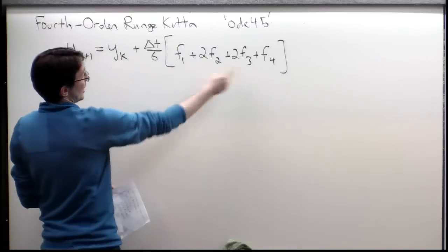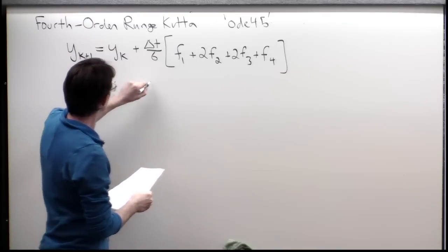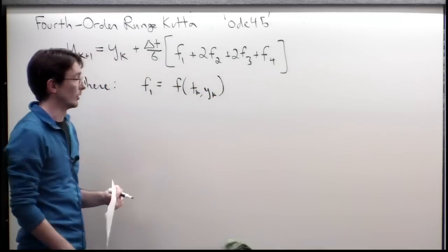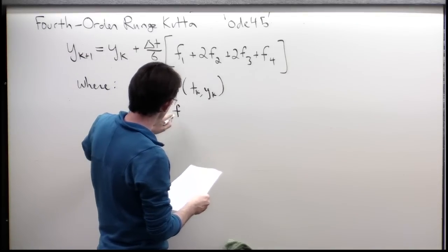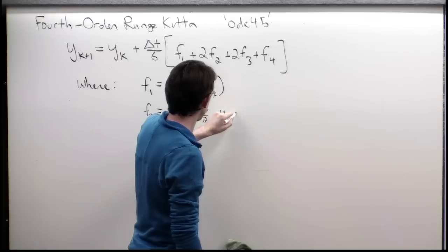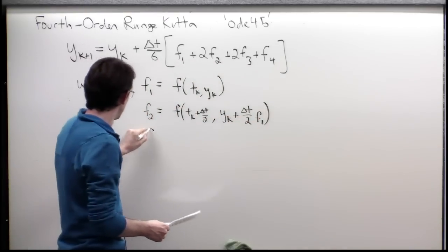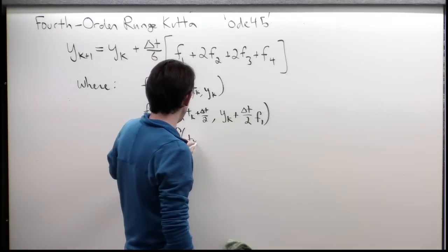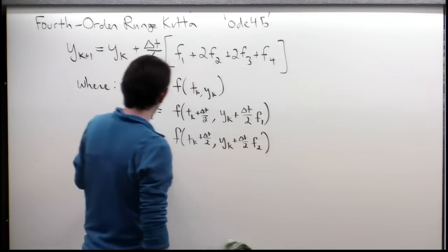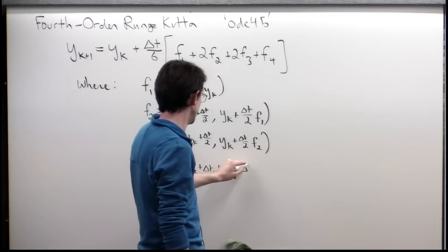Where: F1 = F(t_k, y_k); F2 = F(t_k + delta-t/2, y_k + (delta-t/2)·F1); F3 = F(t_k + delta-t/2, y_k + (delta-t/2)·F2); and F4 = F(t_k + delta-t, y_k + delta-t·F3).